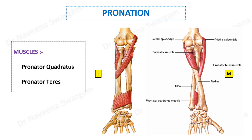Pronator teres arises in the form of two heads: a humeral head and an ulnar head. The humeral head arises from the area in front of the medial supracondylar ridge of the humerus, while the ulnar head arises from the medial surface of the coronoid process of the ulna. It gets inserted onto the middle one-third of the lateral surface of the shaft of the radius. When it contracts, it rotates the shaft of the radius around the shaft of the ulna.